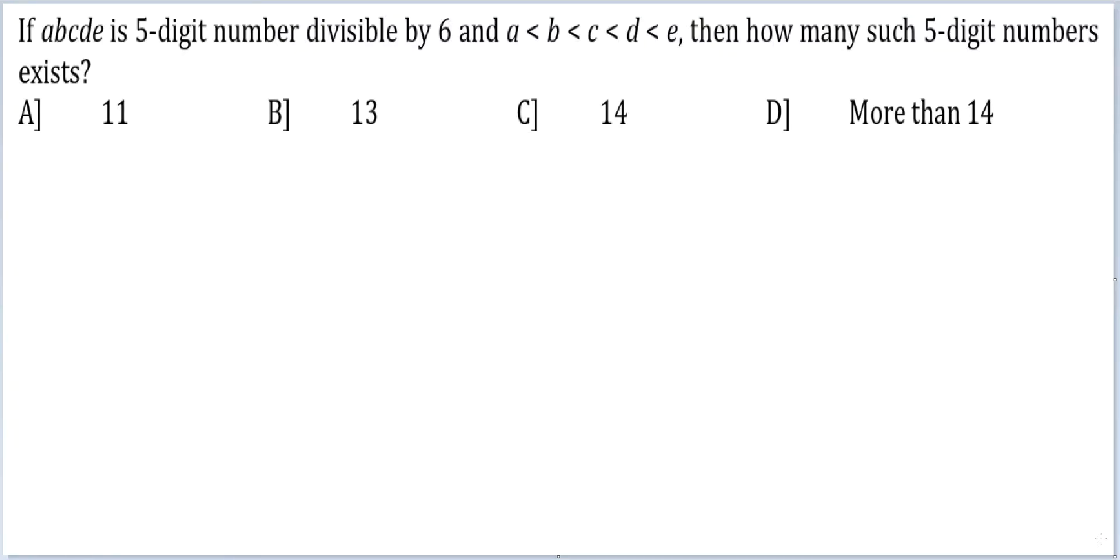Let's look at this question. If abcde is a five-digit number divisible by 6 and a is less than b is less than c is less than d is less than e, then how many such five-digit numbers exist?